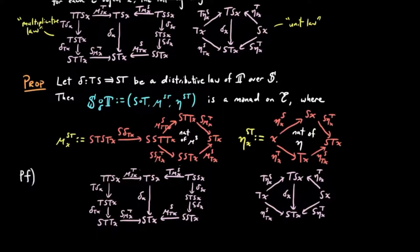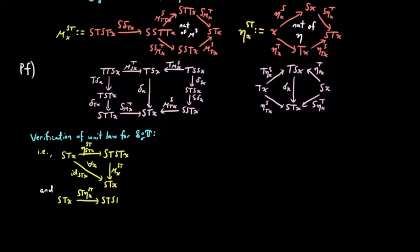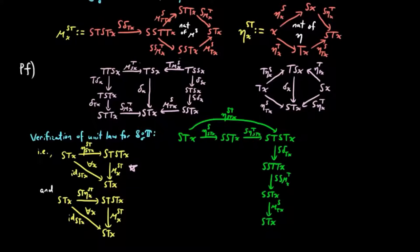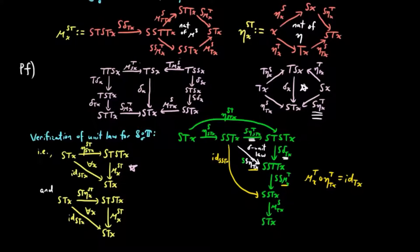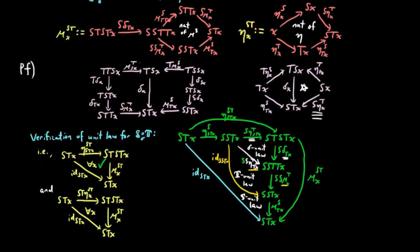To prove that this gives us a monad, we need to verify the unit and multiplicative laws. First, we verify the unit law — the following two diagrams commute. Let's show that the top diagram commutes. By definition of the unit and multiplication for ST, we have the following composition, which we must show is equal to the identity on STX. The right corner triangle is equal to S of eta_T on TX by the right-hand triangle of the unit law for delta. Since mu_T composed with eta_T on TX is the identity on TX by the unit law for the monad T, we can reduce the diagram. Since mu_S composed with S of eta_S on STX is the identity by the unit law for the monad S, we arrive at the identity of STX.